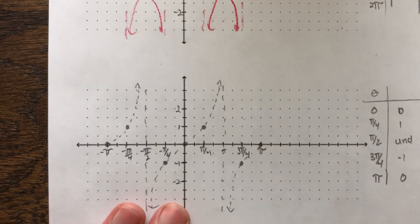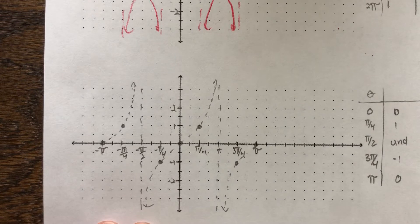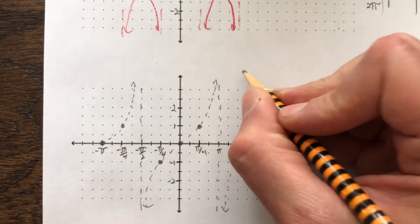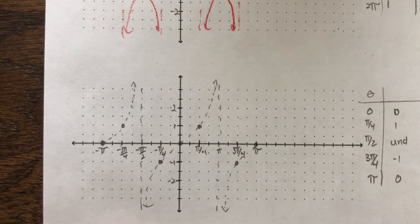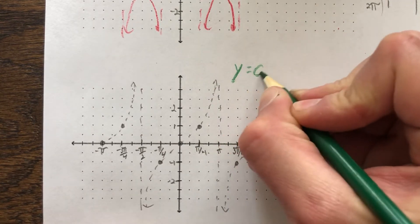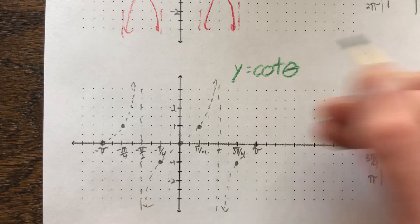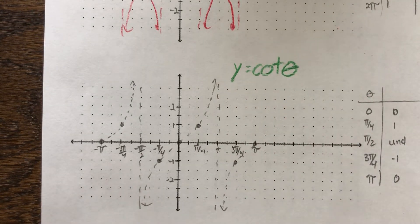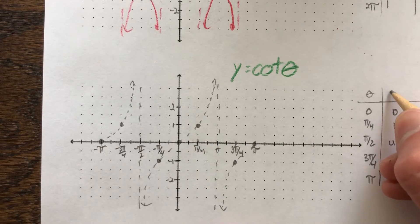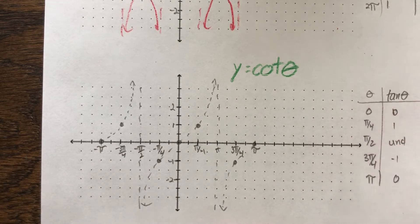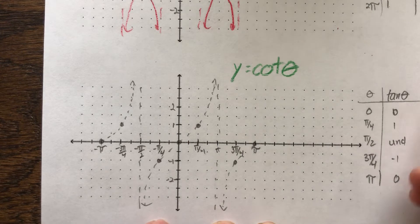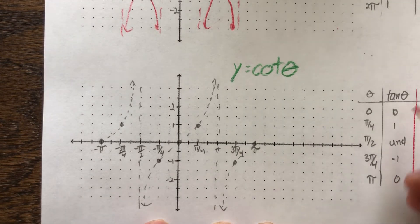So, now, when we go to look at tangent, okay, or cotangent, all right? Let's do this one in green. Okay? So, same idea, all right? It's a little bit different, though, because you've got some things going on. But, we'll take a look, okay? Same idea.